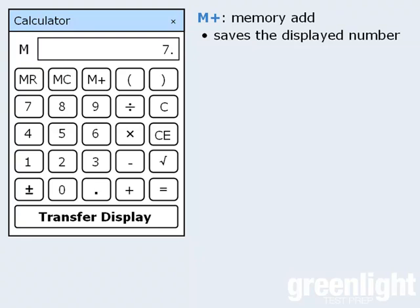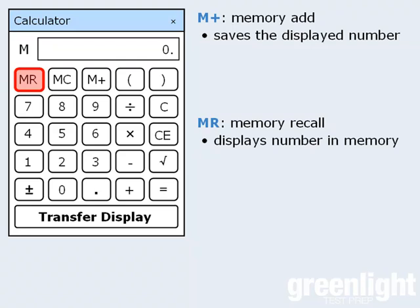Notice that this M up here indicates that there's a number stored in memory. Now let's press clear all to erase the display and continue. Next, we have the memory recall button. It displays whatever number is currently stored in the memory.